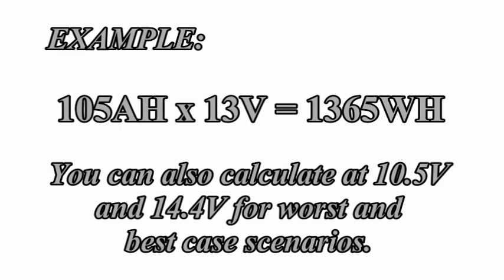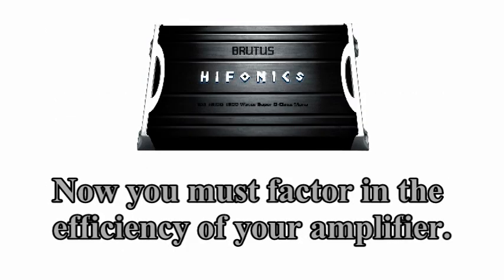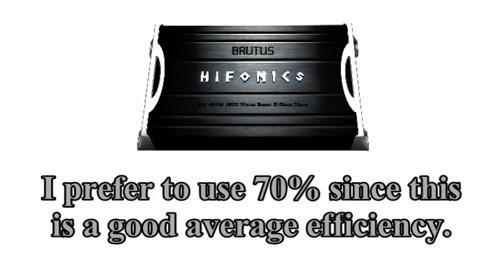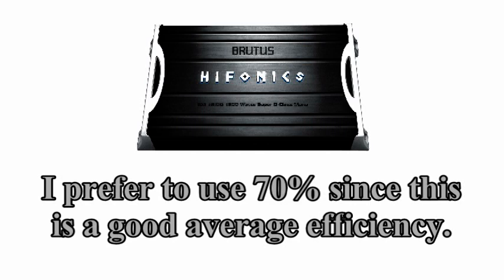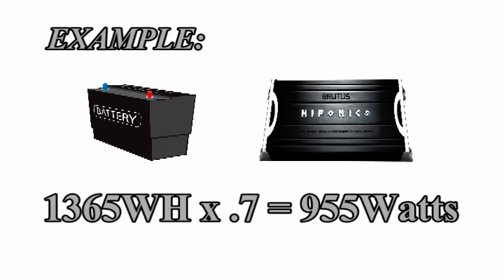You can take this a step further by calculating at 10.5 volts and then at 14.4 volts. This will provide a range of potential power at the worst and best case scenario. It is at this point that you need to factor in the approximate efficiency of your amplifier. I like to use 70% efficiency in my calculations. We know that your battery can produce 1365 watt hours and your amplifier will consume this and produce approximately 70% of the watts it consumes. Here's your example. 1365 watt hours times 0.7 equals 955 watts.